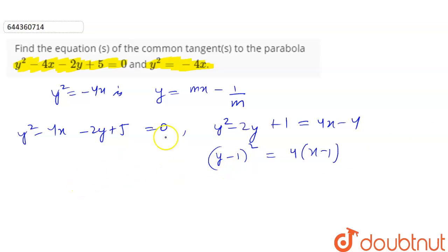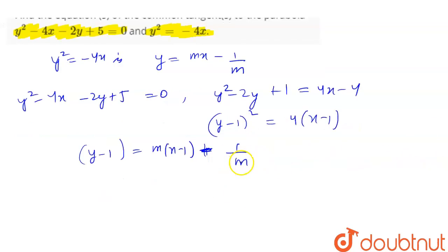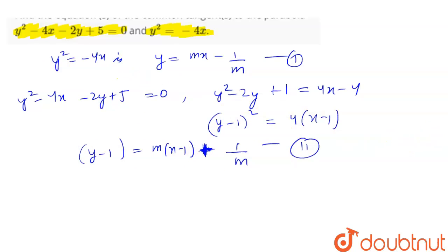For the shifted parabola, the tangent can be written as y - 1 = m(x - 1) + 1/m. Note the positive sign because the first parabola is negative and this one is positive, so it will have a positive sign.